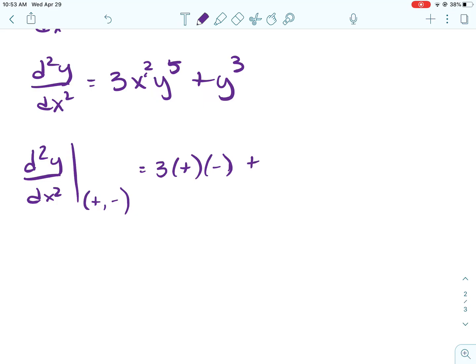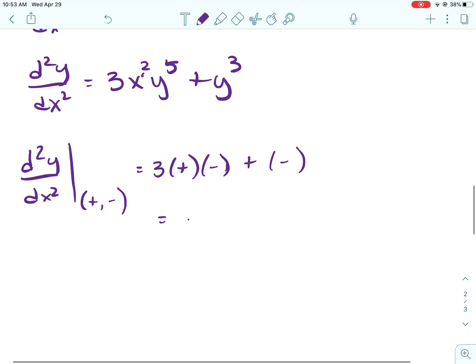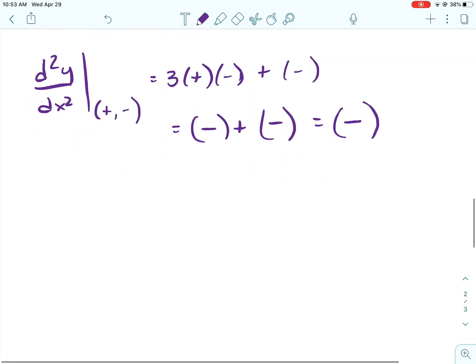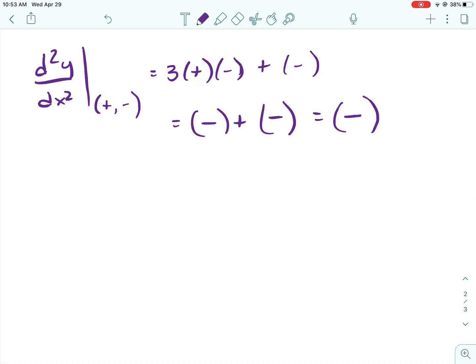All right, so 3 is 3, no matter what. When I plug in anything to x, I'm going to get a positive. So a positive squared is a positive. And then when I plug in a negative for the y, a negative to an odd power is still going to be a negative.